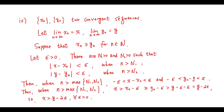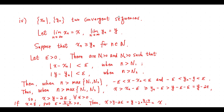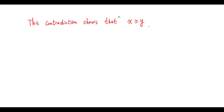So from those inequalities, we get x is greater than y minus 2 epsilon for any epsilon greater than 0. So if x is less than y, put epsilon equals (y minus x) over 2. Then we get x is greater than x, a contradiction. This contradiction shows x is greater than or equal to y.